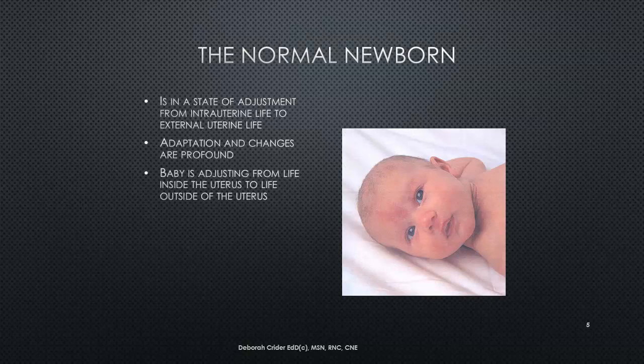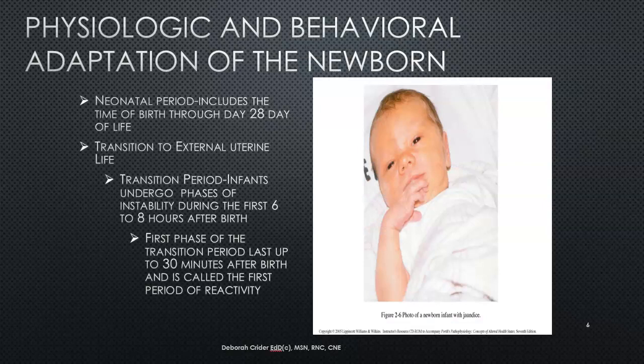When you look at the normal newborn, the first thing to remember is that the newborn is in a state of adjustment — adapting from life inside the uterus to life outside the uterus. This state of adaptation is profound; all of their body systems are changing. The way they receive and process oxygen completely changes, and their circulatory system changes. The physiological and behavioral adaptation of the newborn is extremely complex.